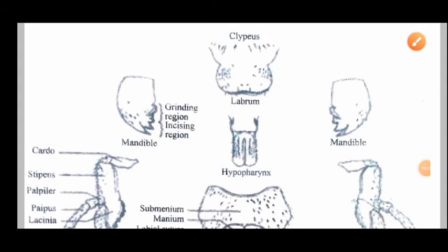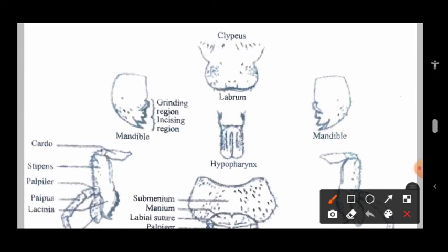Welcome dear students. In the last lecture we have seen the various types of mouthparts which are present in a specific insect. In this lecture we are going to study the typical mouthparts — what is the structure of the typical mouthparts.